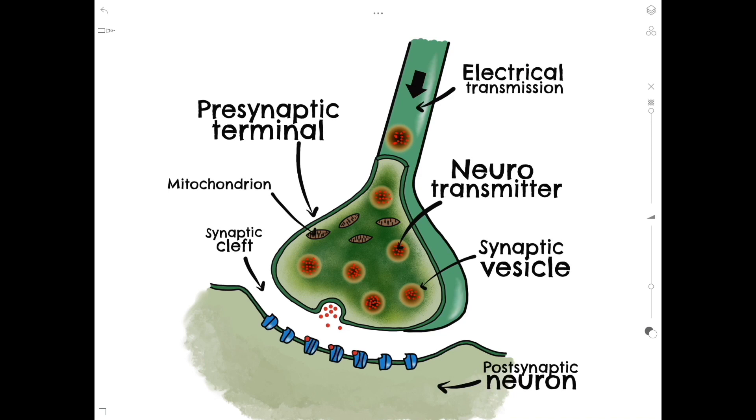Once the vesicles have fused with the plasma membrane, their contents can be released into the synaptic cleft. The neurotransmitters are therefore able to diffuse through the synaptic cleft and bind to receptors located on the postsynaptic neuron.